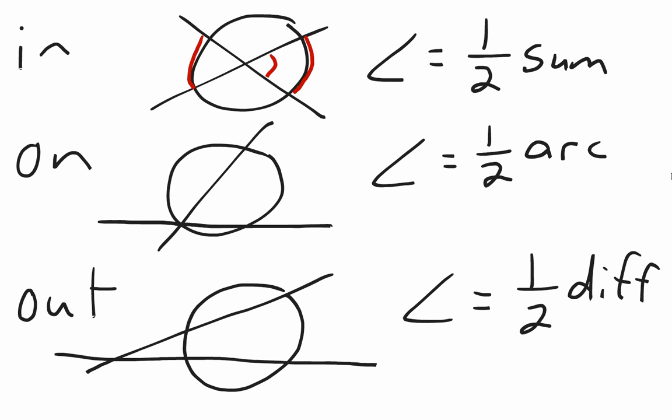If the intersection is on the circle, the angle formed is half of the one arc that the angle opens up to. When the intersection is outside the circle, the angle formed is half of the difference of the arcs — take the big one, subtract the little one, and take half of that. So: inside, half the sum; on, half the one arc; outside, half the difference.